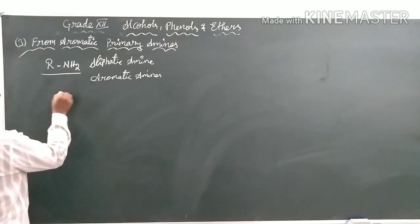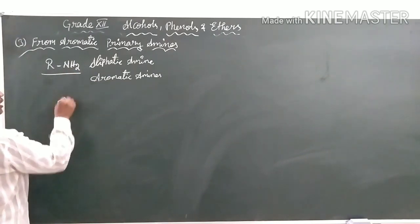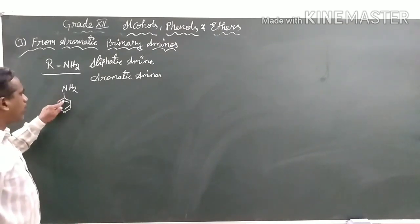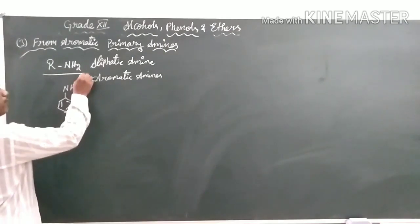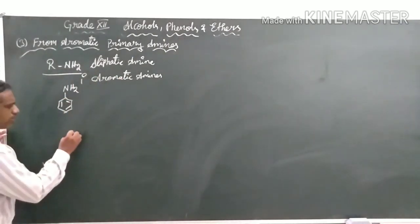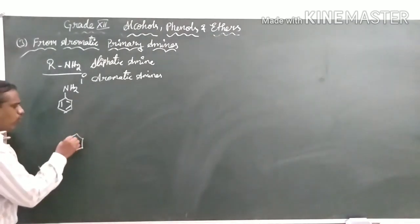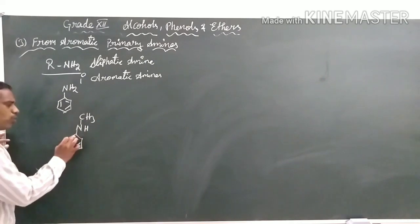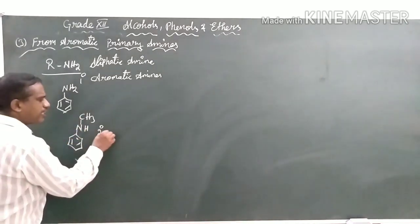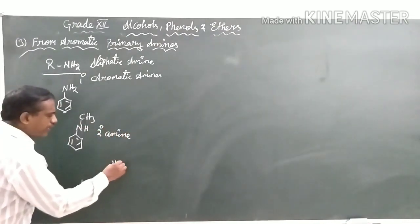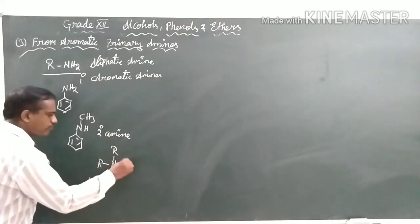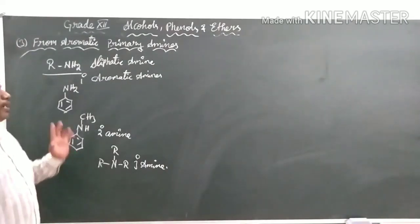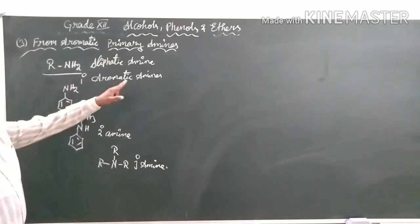Aromatic amines are those in which NH₂ is bonded to a benzene ring — that is, an aromatic compound. When nitrogen is bonded to only one carbon, it is called a primary aromatic amine. If nitrogen is bonded to two other carbons, it is called a secondary amine. Our task presently is to prepare phenol from the primary aromatic amine.